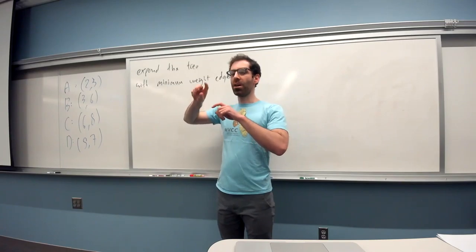Ron asks whether the edge count depends on edge weight. The specific edges chosen definitely depend on edge weight, but the total number of edges in the minimum spanning tree is always the same — because we want to form a tree, it's always n-minus-one edges regardless.